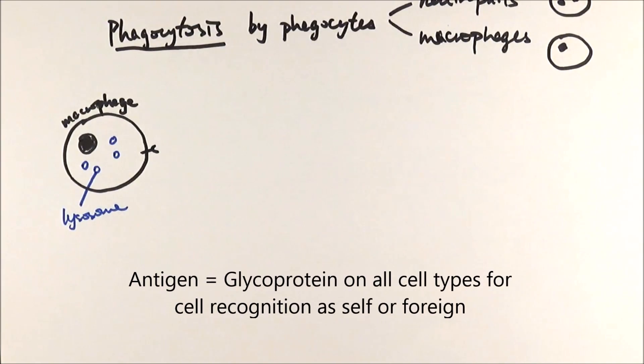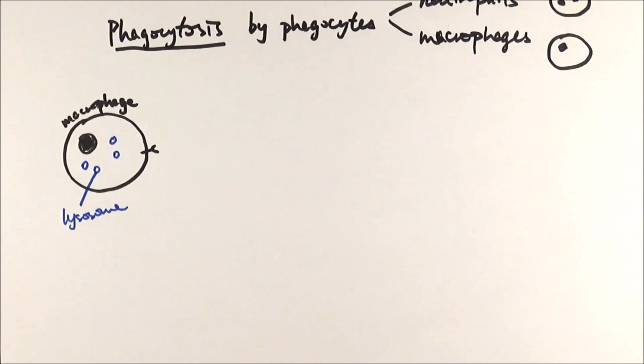So antigen is another glycoprotein on all types of cells. And the body recognises this as either self-antigen or foreign antigen. If it's a self-antigen, that means it's our own body cell, then the macrophage or white blood cell will leave it alone. But if they recognise this as a foreign antigen...